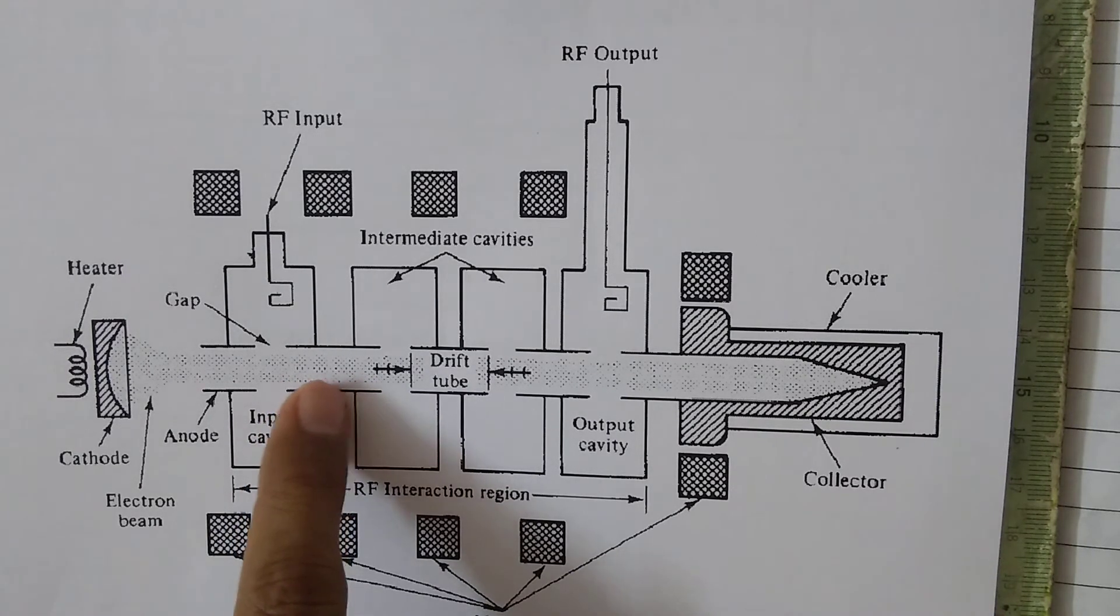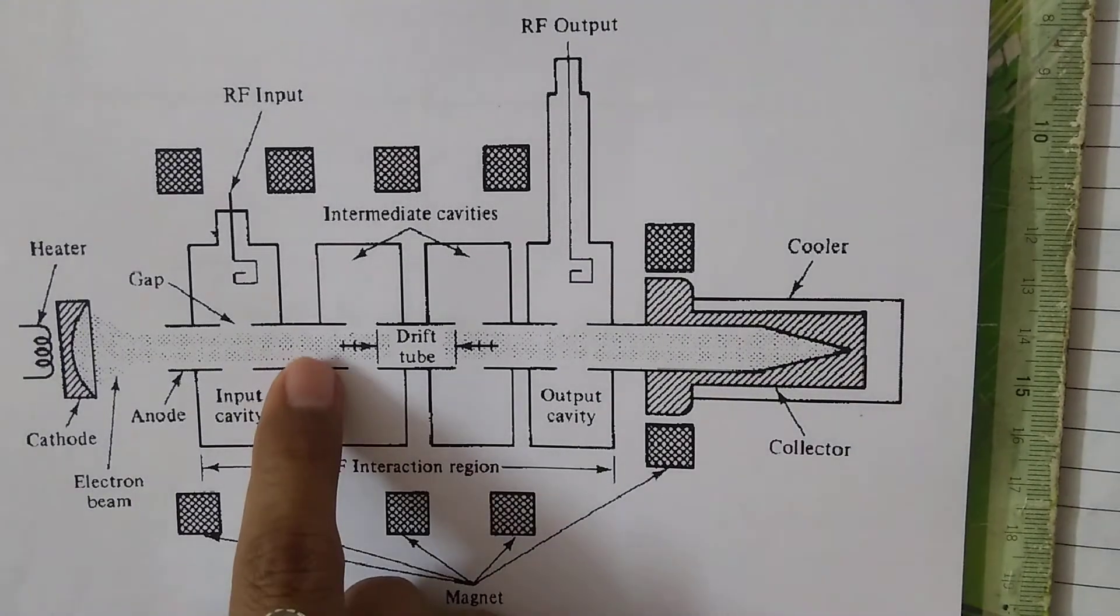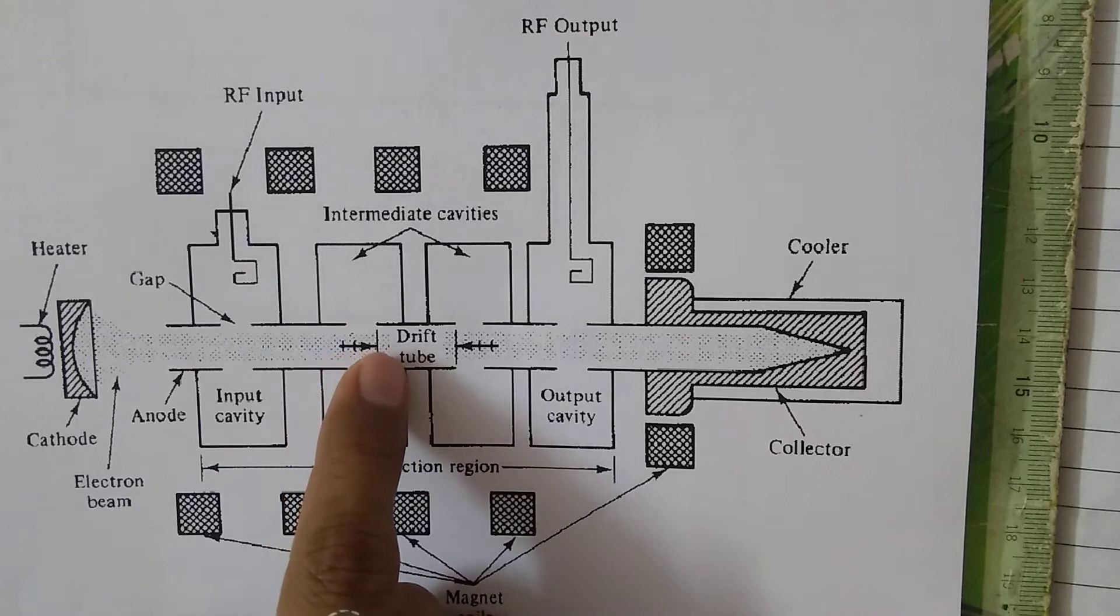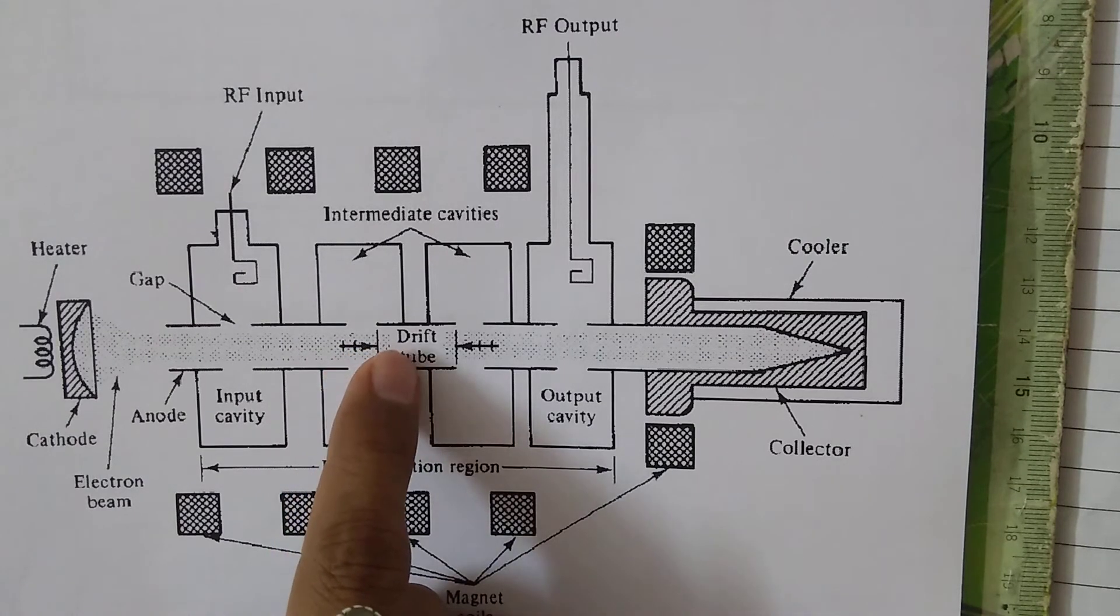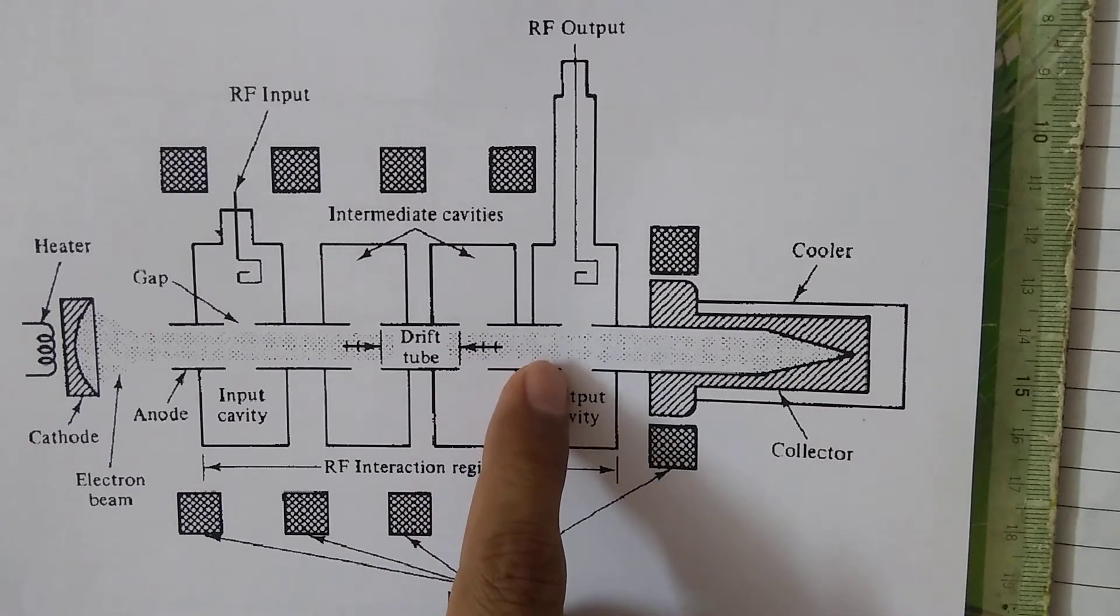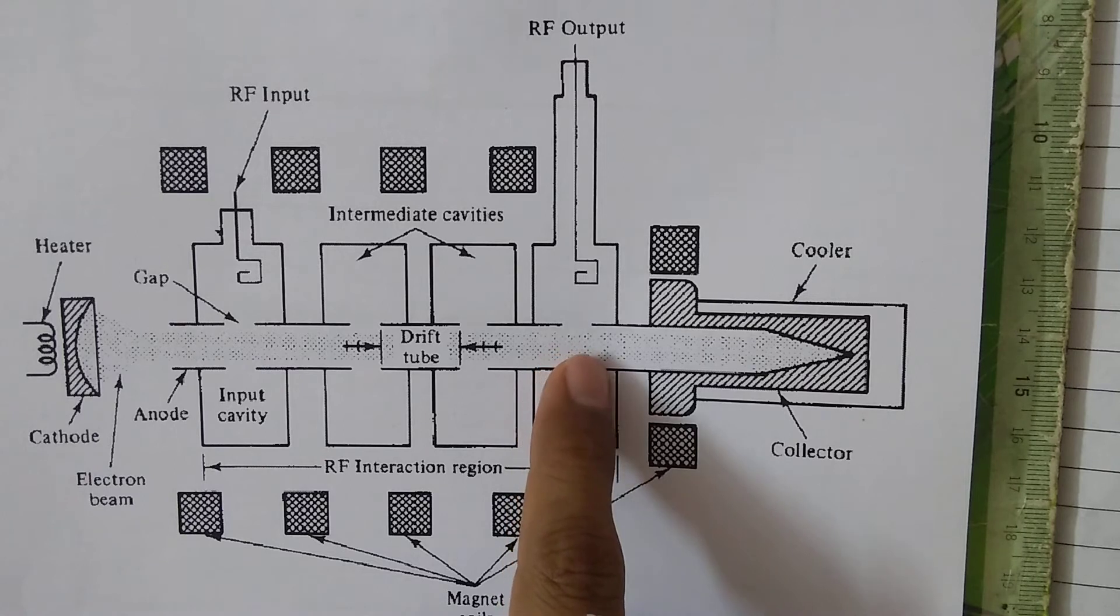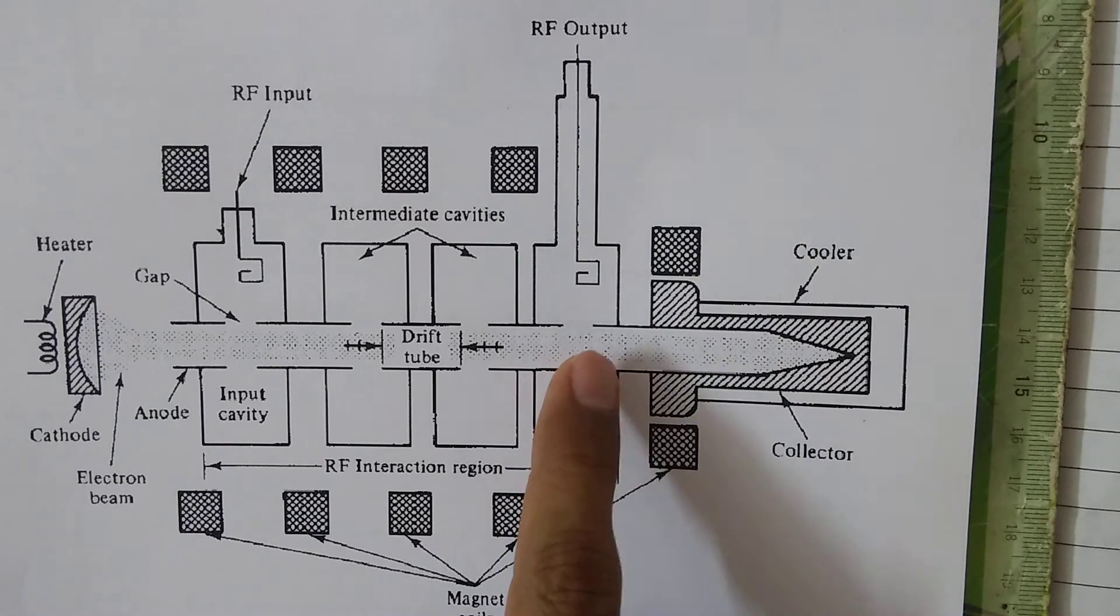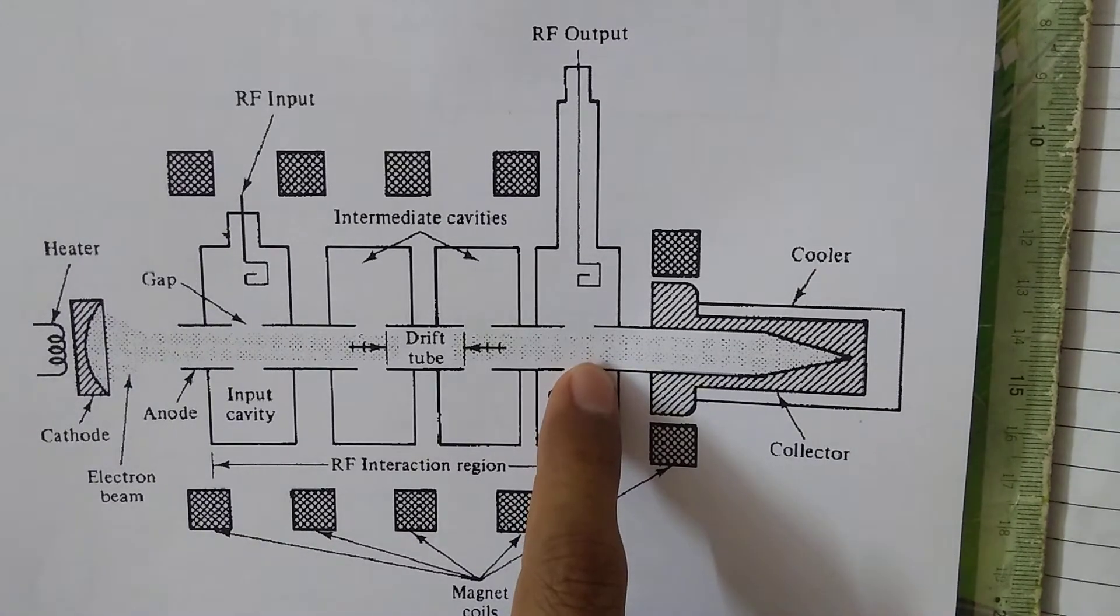We have discussed the bunching process in detail in a previous video. The effective bunching keeps improving as the output of the first cavity acts as input to the second. As electrons travel along the tube length, the bunching process improves further, and a dense cluster of electrons forms when they reach the final output cavity. A high amount of current is induced into the output structure, resulting in very high output voltage from this multi-cavity klystron amplifier.